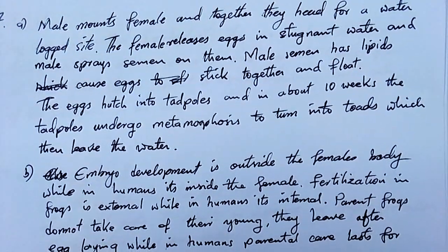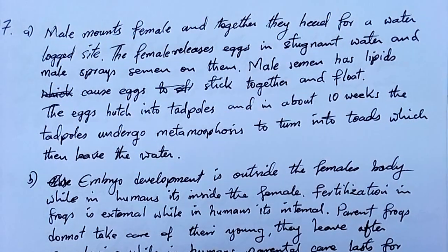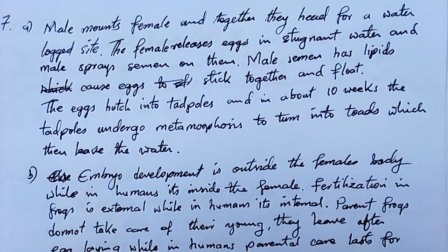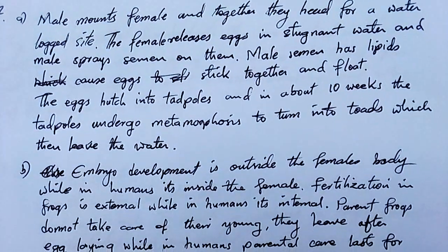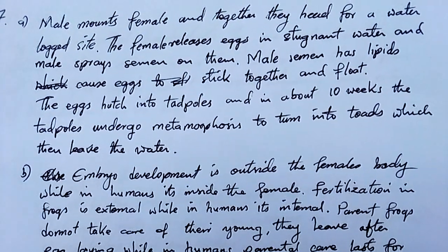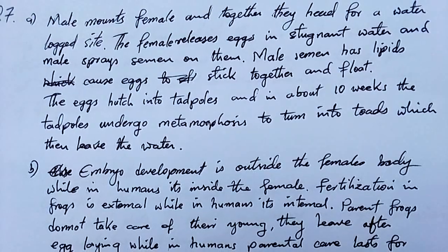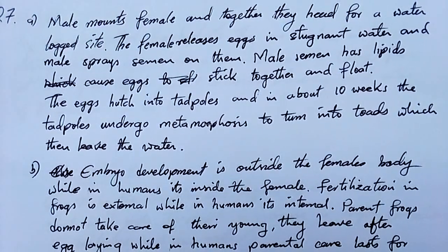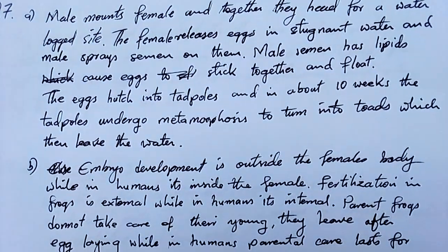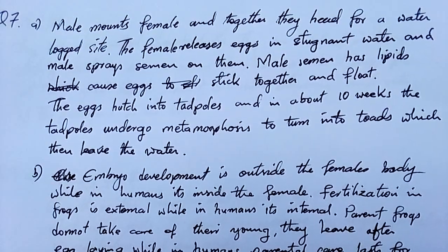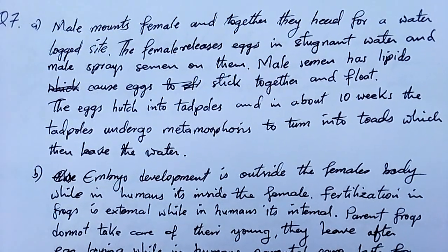Frogs croak to impress females — they do that to communicate during their mating season. The female releases eggs in stagnant water and the male sprays semen on them. There's no penetration — the semen from the male is just sprayed on the eggs, and they mix and fuse.